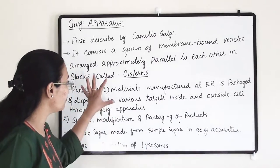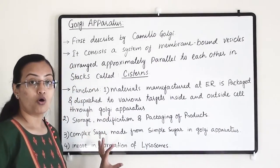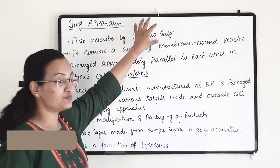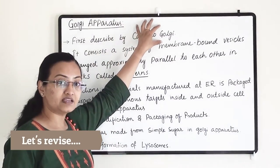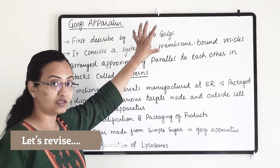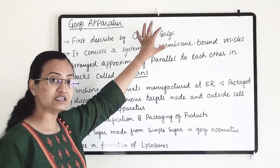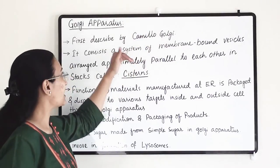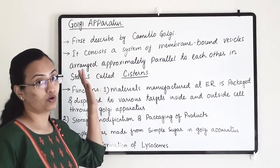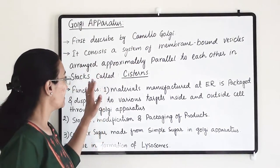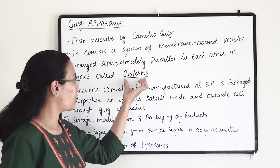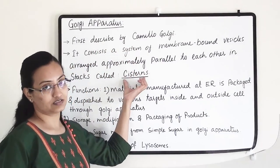These are the functions of the Golgi apparatus. It was discovered by the scientist Camillo Golgi, and based on his name this organelle is called the Golgi apparatus. They form structures called cisterns.